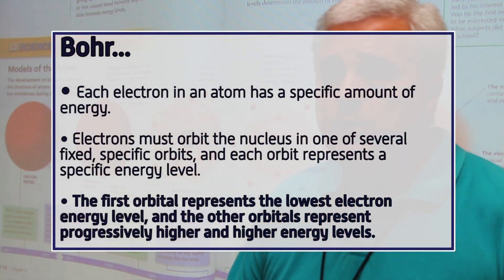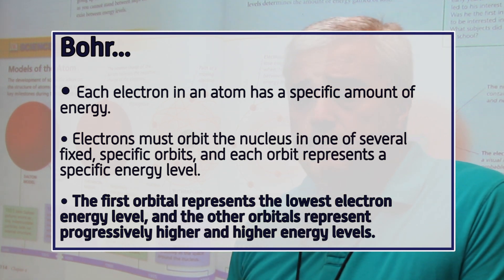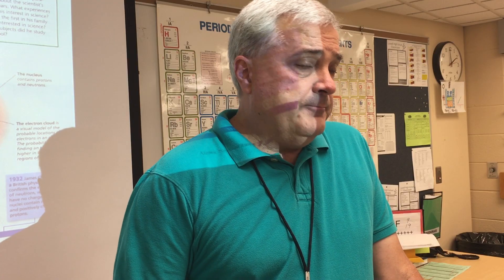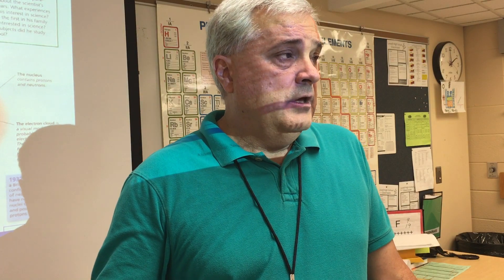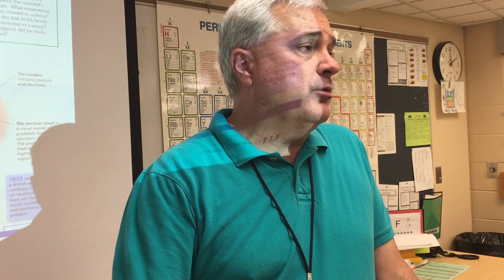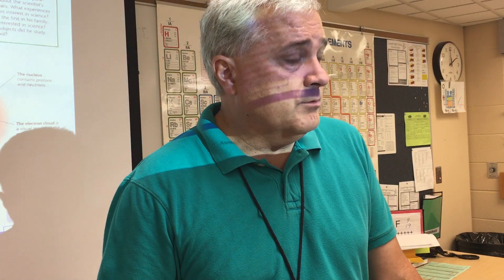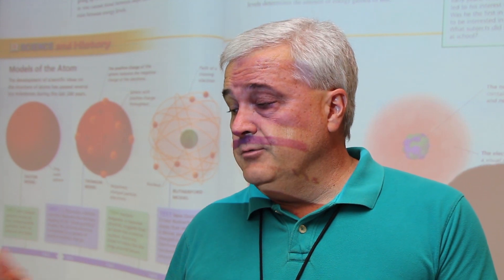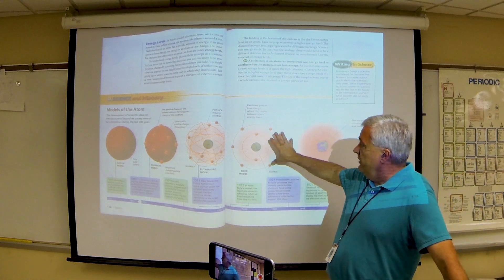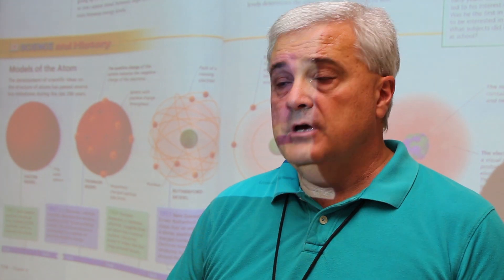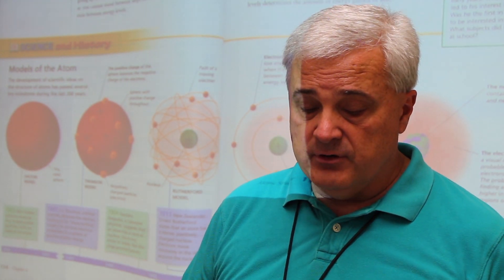Bohr's model began to inform modern chemistry so that we could understand how electron position within the various orbitals caused certain chemical properties, causing elements to react in similar ways when certain conditions were the same and differently when conditions were different. The Bohr model was very helpful in guiding our understanding of how elements combine to form different chemicals.